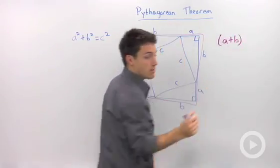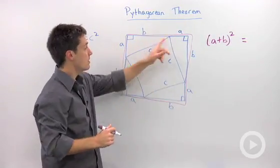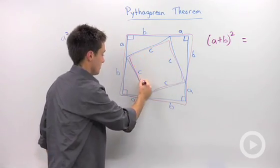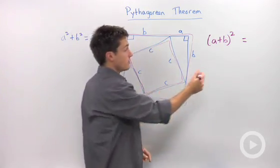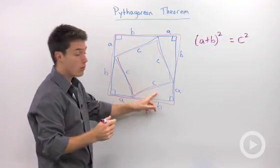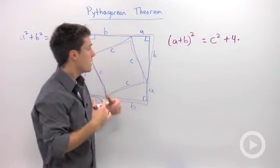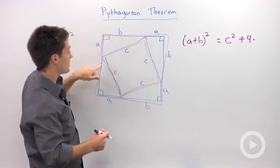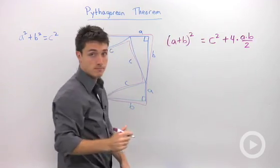To calculate the area of the whole square, we take one of our side lengths — which is a plus b — and square it. That has to equal the sum of its parts. The smaller square in the middle has side c on all sides, so that's c squared. Then we add four congruent triangles. The area of each triangle is base times height divided by two: that's (a times b) divided by 2.